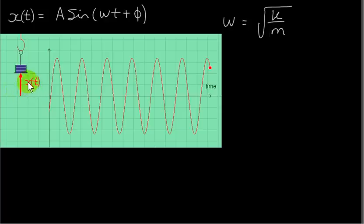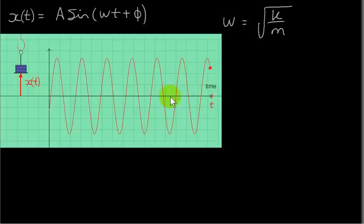X of t is really a vector — it can be positive or negative. When the mass is above the equilibrium position, it's positive; when the mass is below, it's negative. You can see that for this particular time, X of t is positive — it's a point above the t axis. But for other times, X of t can be negative. And X of t varies according to a sinusoidal function of this form.